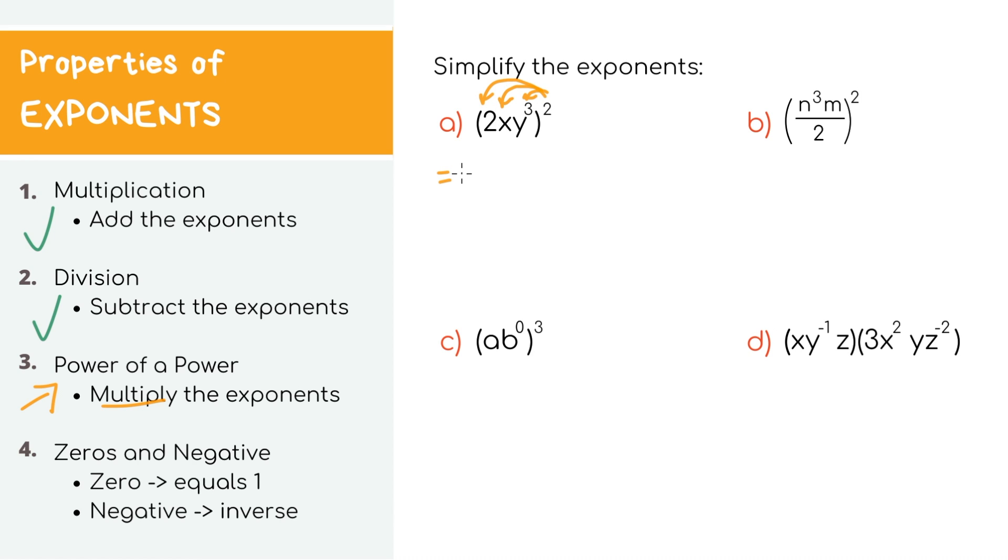x², and with the y, it's already to the third power, so we're going to use the rule and multiply the exponent since it's a power raised to a power. We'll have y to the 3 times 2. Simplifying, we'll get 4x²y⁶. And that's our answer.